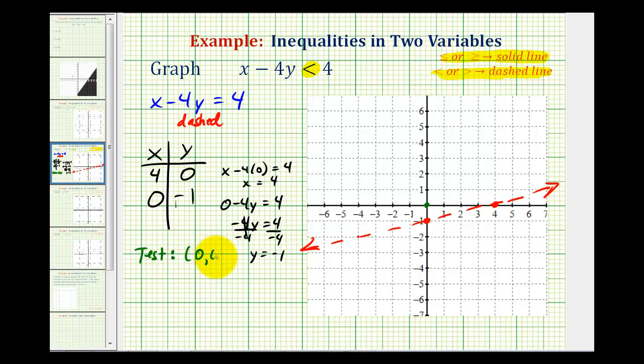So we're going to test the inequality using the ordered pair zero, zero. So if we have x minus four y is less than four. And we're substituting zero for x and zero for y, we have zero is less than four. Well zero is less than four. So this is true.